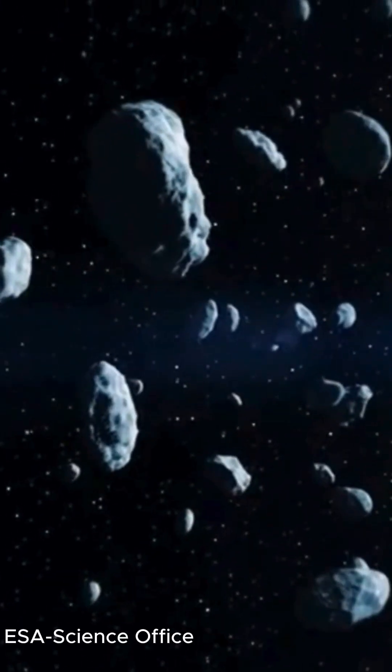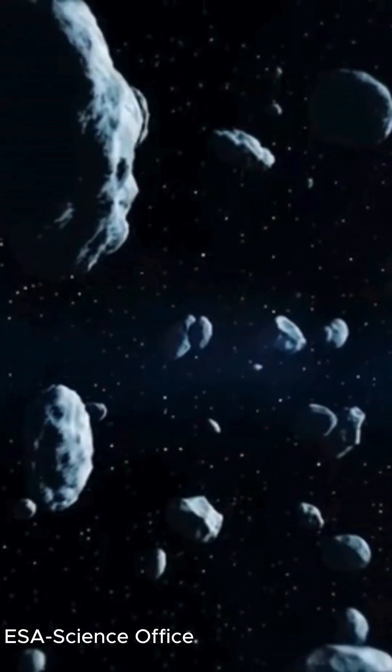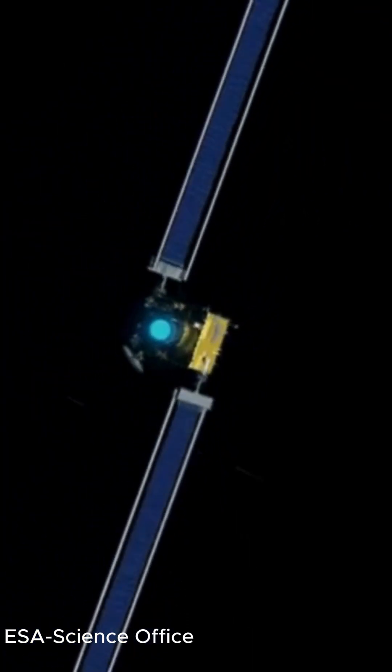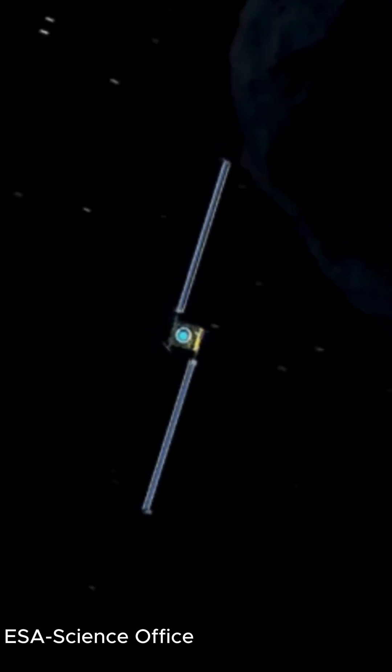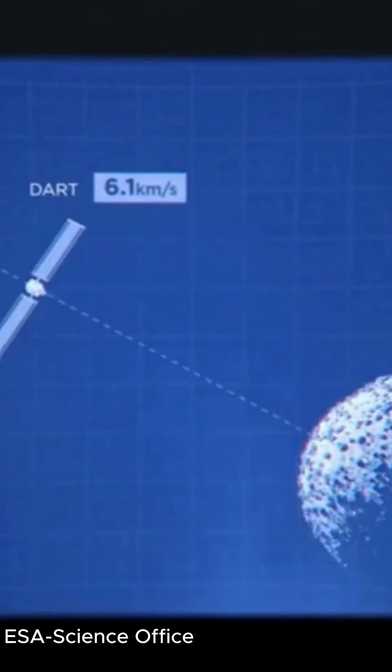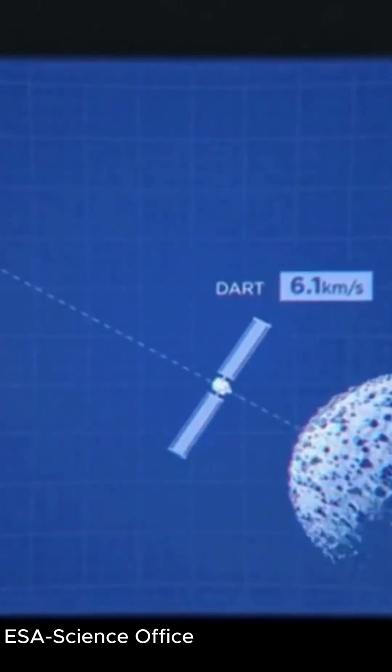And the story isn't over. The European Space Agency is launching the HERA mission. It's returning to the scene of the crime, the DART impact site, to solve the physics of the crash. Asteroids carry the building blocks of life and the power to end it.